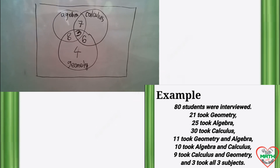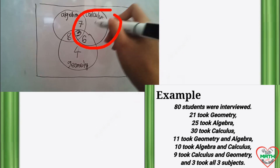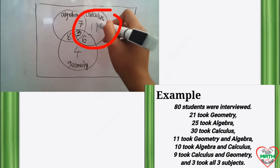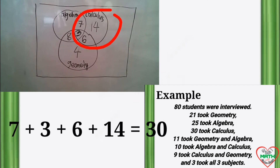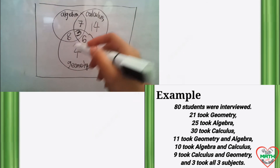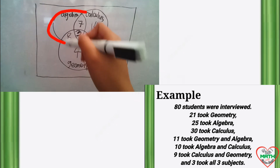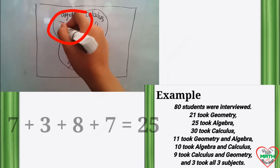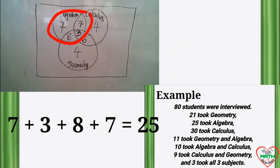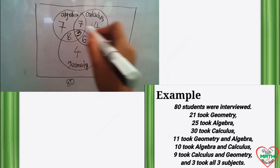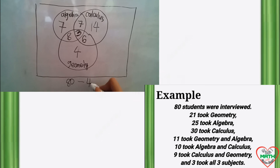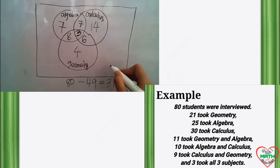For calculus, there are 30 students who took this subject, so we add 14 here to make it 30 — 7 plus 3 plus 6 plus 14 equals 30. For algebra, there are 25 students, so we add 7 to make it 25. We interviewed 80 students and the total so far is 49, so we subtract: 80 minus 49 equals 31. Therefore, there are 31 students who did not take any of the subjects.